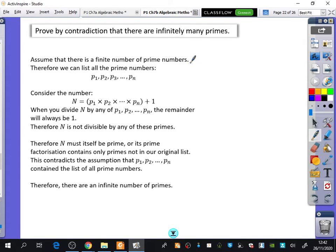To prove there's a finite number of prime numbers by contradiction, we list all the prime numbers. That's how we start this proof. If we have a list of these prime numbers, consider the number capital N, which is all those prime numbers multiplied together, and then add 1 to it.